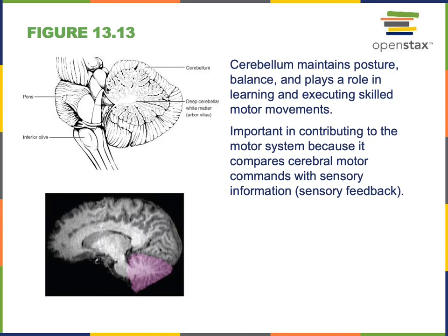The cerebellum is located just posterior to the pons, the middle region of the brainstem. The functions of the cerebellum are important for unconscious coordination of motor commands and maintaining posture and balance. The cerebellum performs a type of learning that stores information from previous motor commands and enables a corrective signal to fine-tune future motor commands based on errors made with previous motor commands.